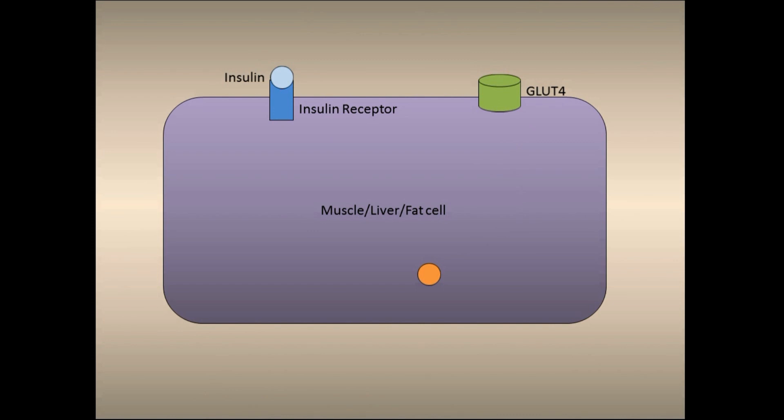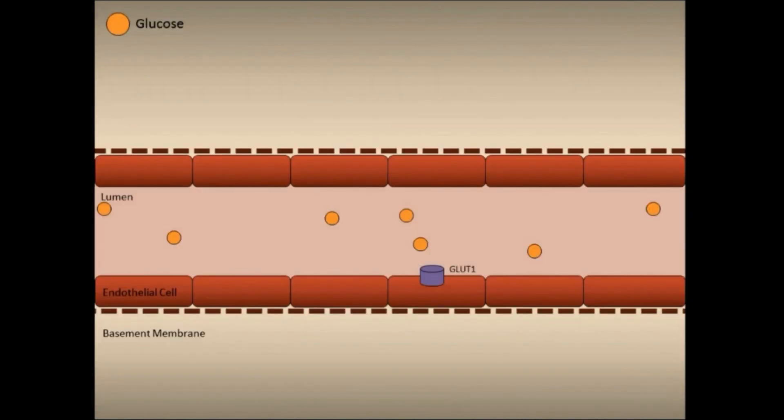However, in insulin deficient patients or in patients who have insulin resistance, GLUT4 stays inactive inside the cell and glucose is trapped in the blood.